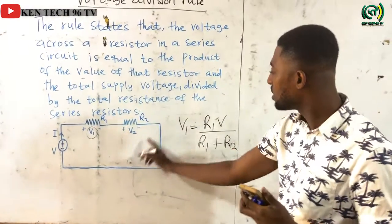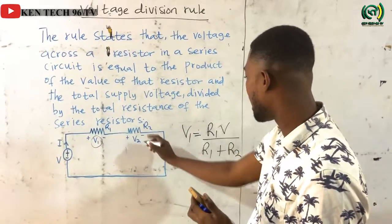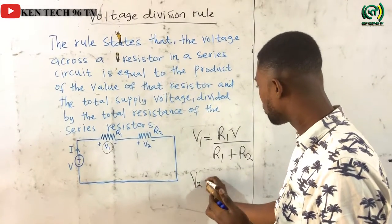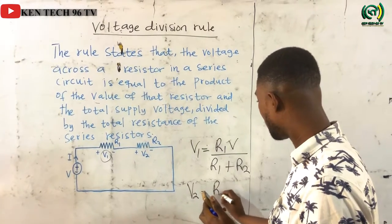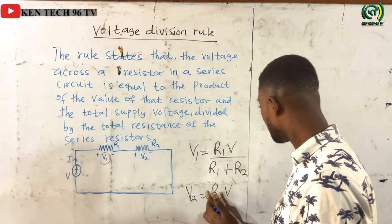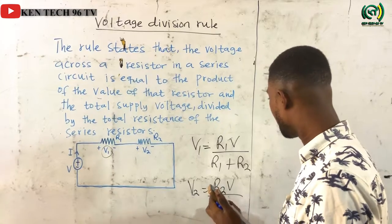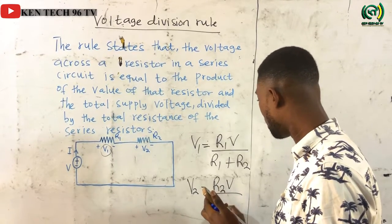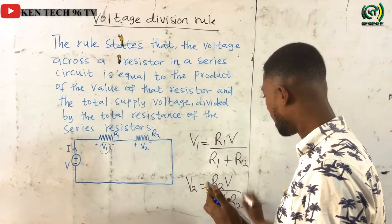If I want to calculate the voltage drop across resistor R2, which is V2, V2 would be equal to R2 multiplied by the total supply voltage V, all divided by R1 plus R2.